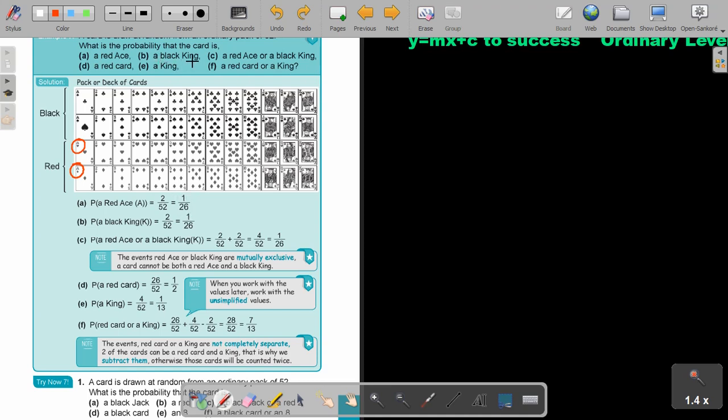A black king. Remember we are now in black. Let's make it blue. Where is the kings? Here is the kings. And again, what can you see? There is 1, 2. So it is again 2 out of 52 which will simplify to 1 over 26.